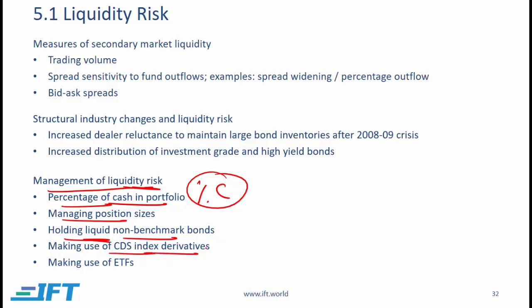CDX index derivatives offer an alternative way to get exposure to credit risk, and their liquidity is far higher than that of corporate bonds, allowing exposure to credit markets while maintaining liquidity. Fund managers can also use exchange-traded funds, which have become very popular. In 2016, the total value of high yield ETFs was $40 billion and investment grade ETFs was $90 billion. A major advantage is automatic diversification, though money can flow in and out easily, potentially causing ETF prices to deviate from net asset value.